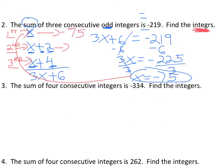So the first integer is just negative 75. The second integer is negative 75 plus 2, which is negative 73. And then the third integer is negative 75 plus 4, which is negative 71. So those are the three integers.